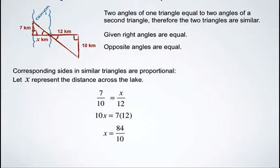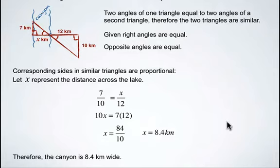Simplifying, you end up with X equals 84 divided by 10. Again, 7 times 12 is 84, then we need to divide by 10 to isolate X, and you end up with X equals 8.4 kilometers. So therefore, the canyon has to be 8.4 kilometers wide.